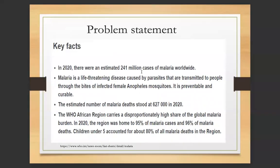Problem statement: In 2020, there were an estimated 241 million cases of malaria worldwide. Malaria is a life-threatening disease caused by parasites transmitted to people through the bites of infected female Anopheles mosquitoes. It is preventable and curable. The estimated number of malaria deaths stood at 627,000 in 2020. The WHO African region carries the disproportionately highest share of the global malaria burden — in 2020, the region accounted for 95% of malaria cases and 96% of malaria deaths. Children under five accounted for about 80% of all malaria deaths in the region.